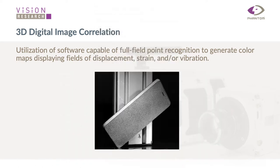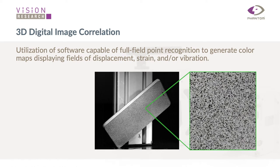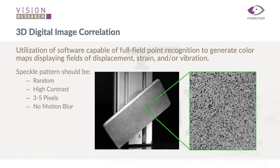A nice example is a cell phone being dropped. If you look closely, you can see a very fine speckle pattern on the surface — well-defined little black dots that give a nice random, high-contrast pattern. This is generally recommended: depending on your system, you want each speckle comprised of three to five pixels. You also want to set your camera up thinking carefully about exposure time to avoid any kind of motion blur.